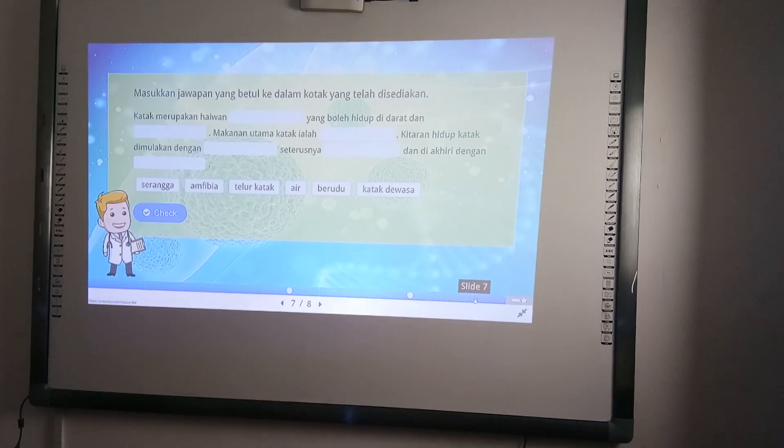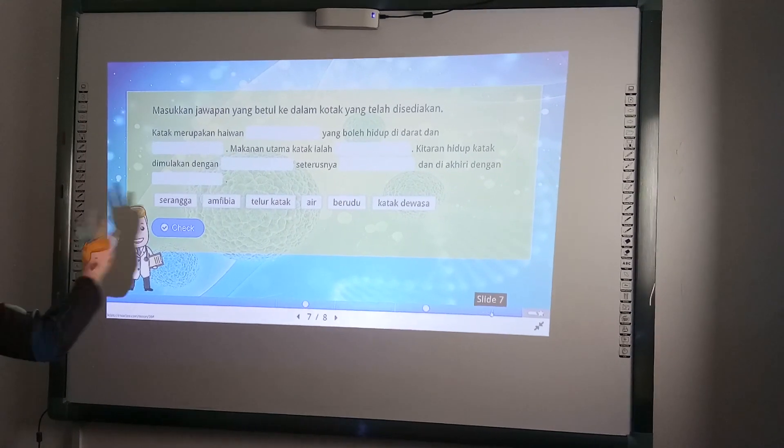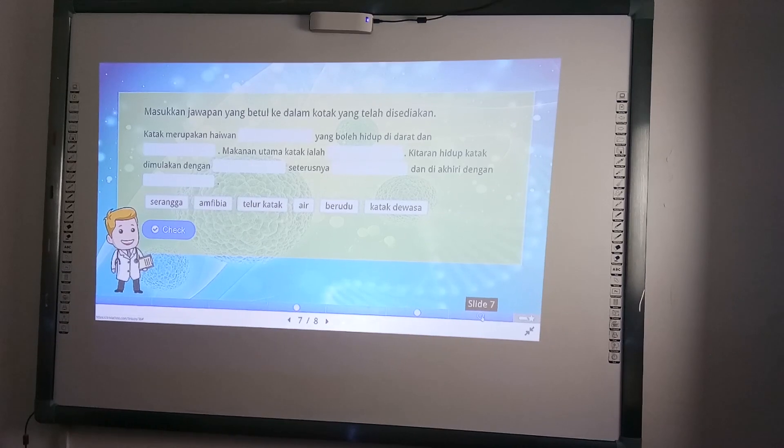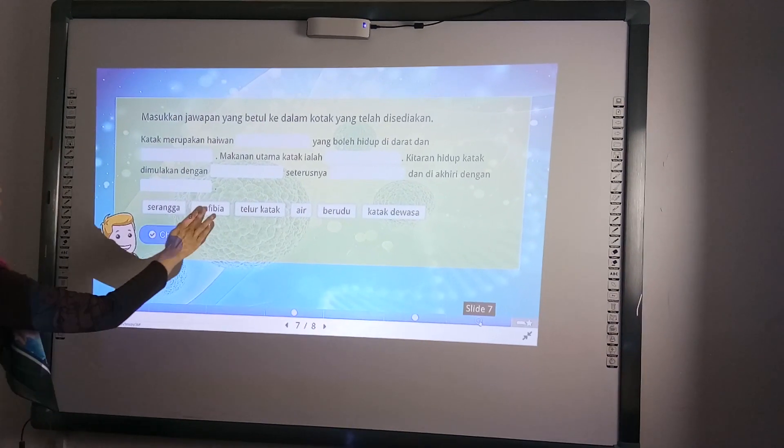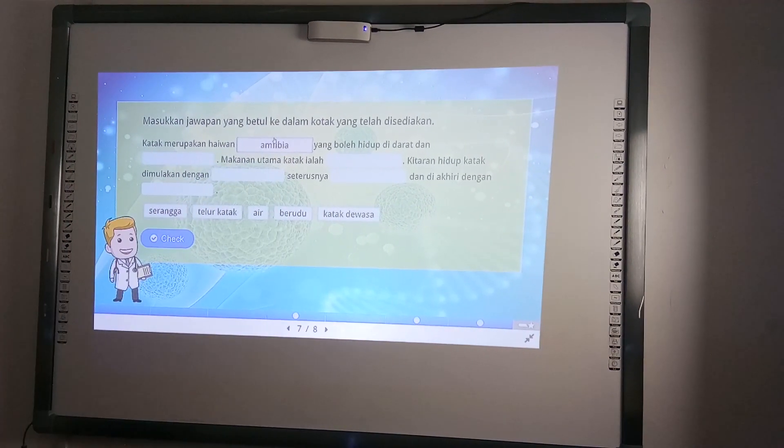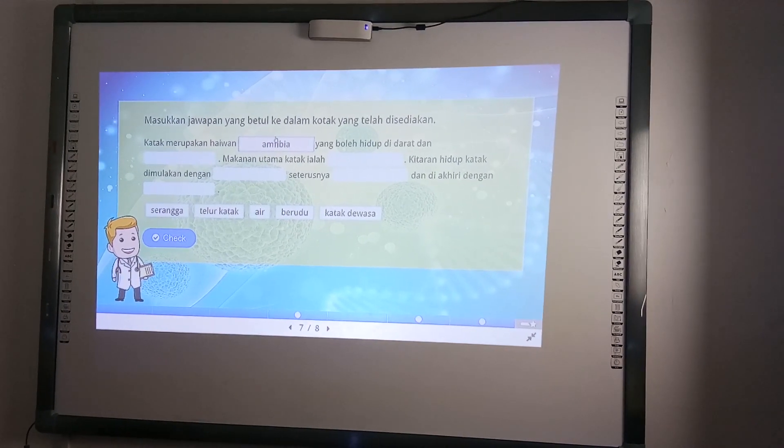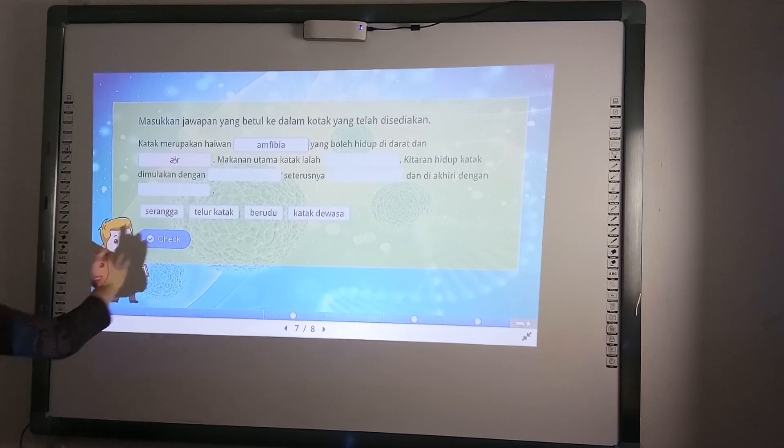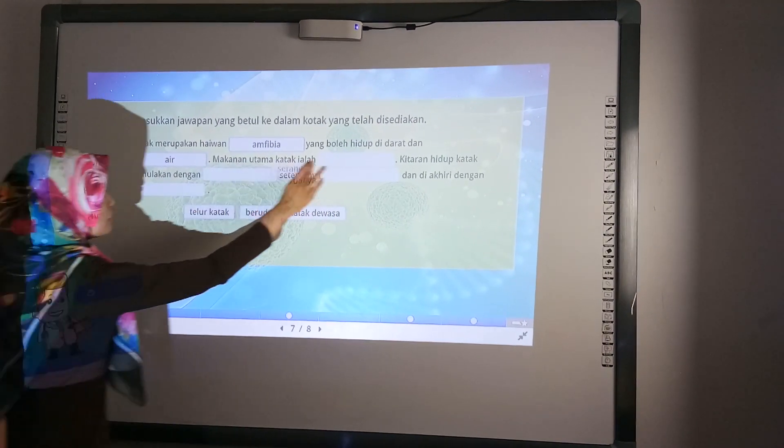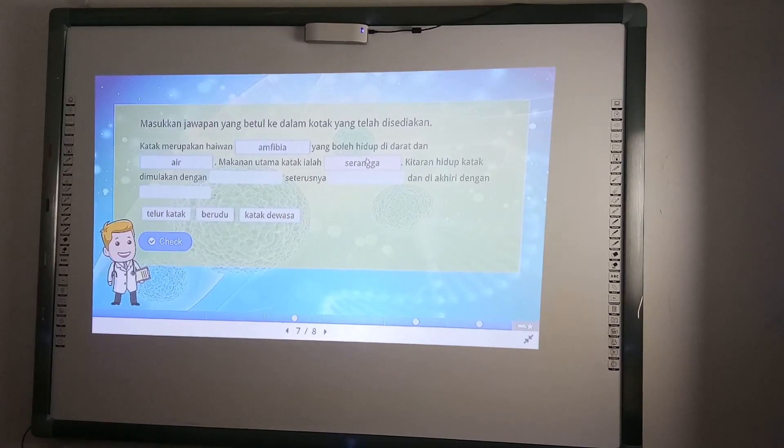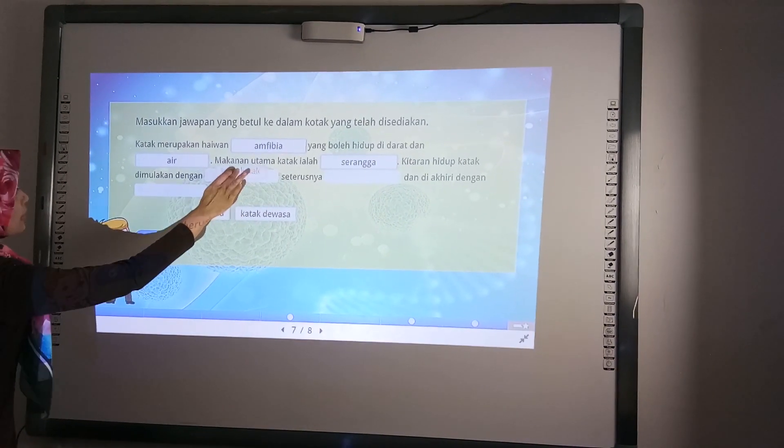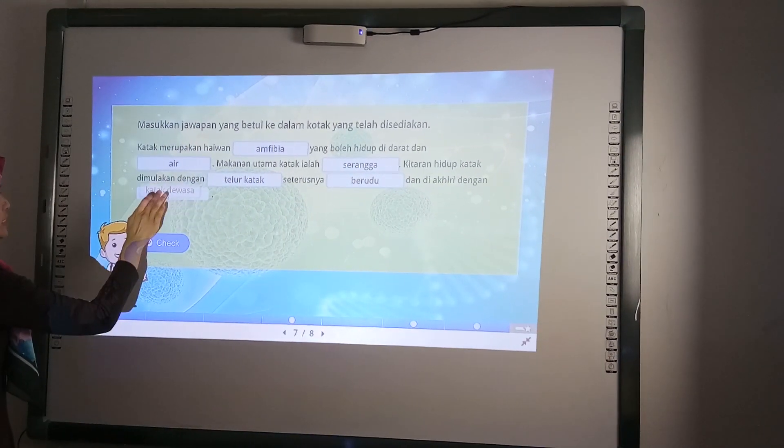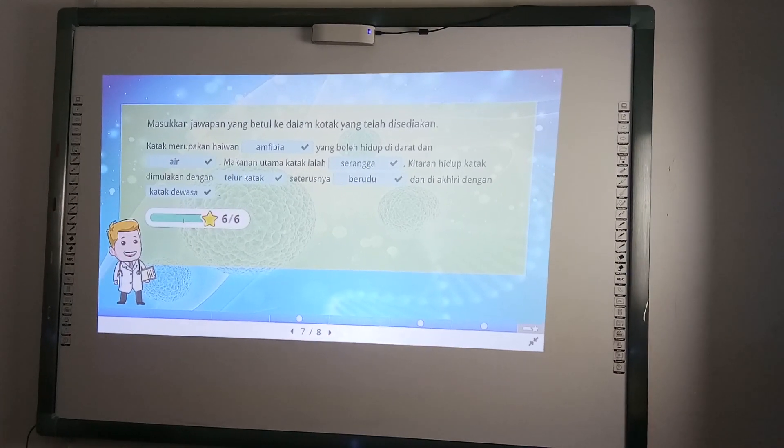Ini adalah isi tempat kosong dengan jawapan yang dah disediakan. Masukkan jawapan yang betul ke dalam kotak yang telah disediakan. Katak merupakan haiwan amphibia. Kita drag jawapan masuk ke dalam kotak. Katak yang boleh hidup di darat dan air. Makanan utama katak ialah serangga. Kitaran hidup katak diberikan dengan telur katak. Seterusnya, gendu. Dan diakhiri dengan katak dewasa. Jadi, kita check. Enam markah.